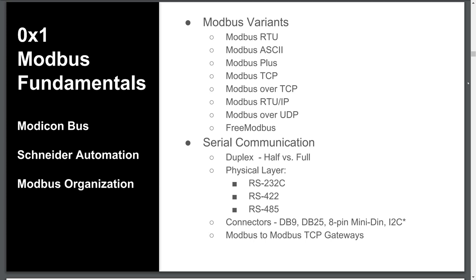The frame fields are nearly identical, with the exception of a one-character start field at the beginning, which will contain a colon or 3A in hexadecimal. RTU is more popular than ASCII; however, open source code for both Modbus RTU and ASCII is available. Whether RTU or ASCII, serial communications typically occur over RS-232, RS-422, and RS-485 field bus configurations.